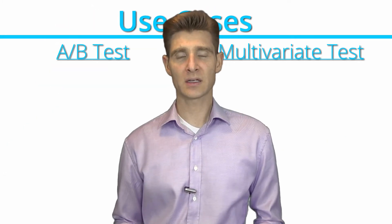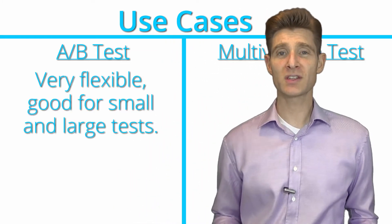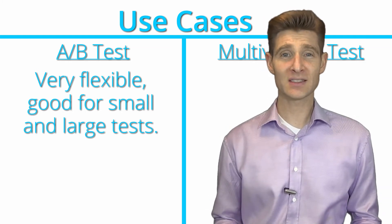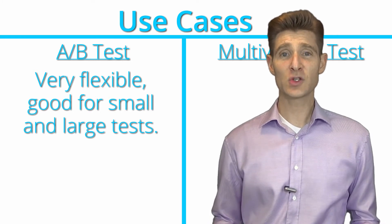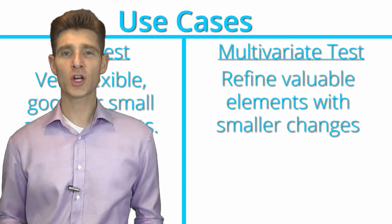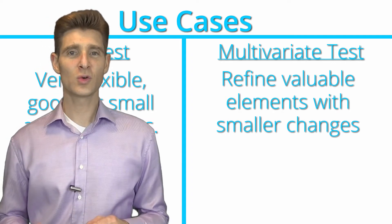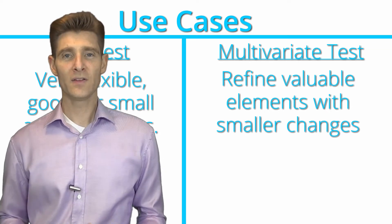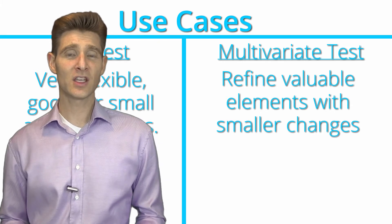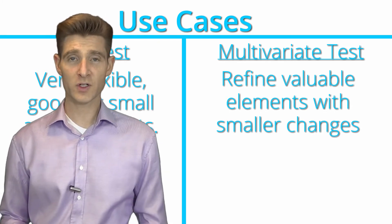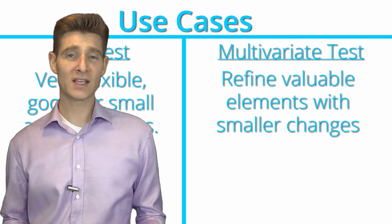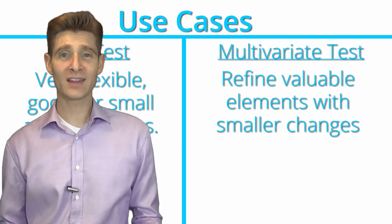Let's talk about the use cases. With an A/B test, it covers most of the tests you want and need to do — small tests, large tests, isolating variables, learning the existence and importance of elements. It's phenomenal in its flexibility. The main use case for a multivariate test is to refine elements that you've already learned are important. Because you're refining existing elements, you're making smaller changes. However, if you start refining an element before you've proven that element should exist in the first place, you might spend time on a multivariate test refining things that don't even matter.